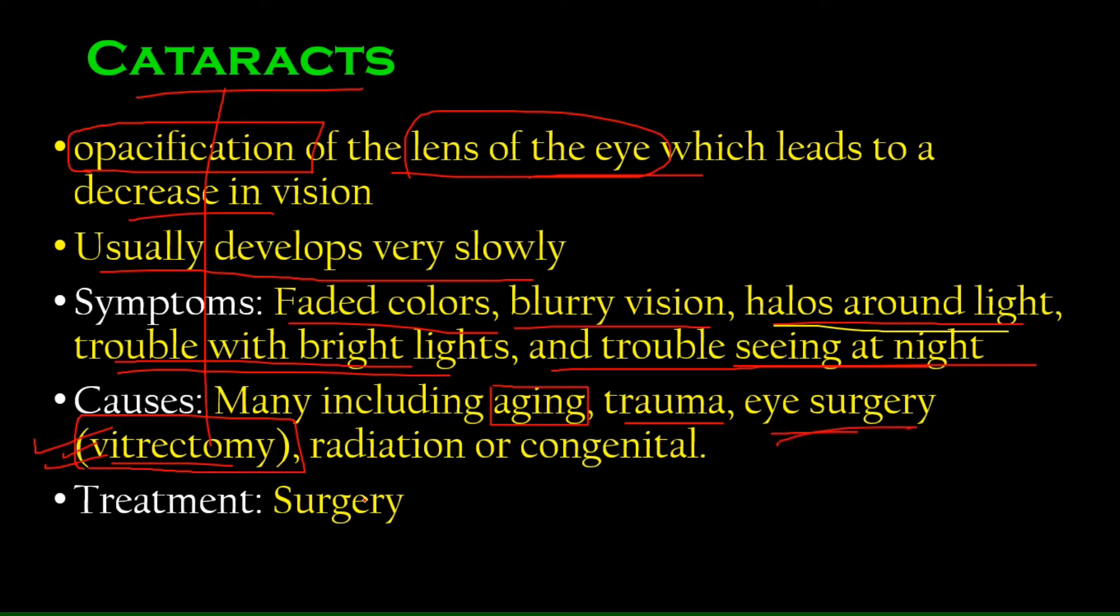Certain eye surgeries can cause cataracts. Then there is radiation, which can damage the structure of the lens. Congenital, of course. If a baby is born and their lens doesn't develop properly during their intrauterine life, that can also cause cataracts. And the treatment of cataract is surgery. You cannot give drugs to probably slow down or remove cataracts altogether. No, it's surgery. You have to do surgery. And its surgeries are actually one of the most successful things in medical. They're almost always successful.